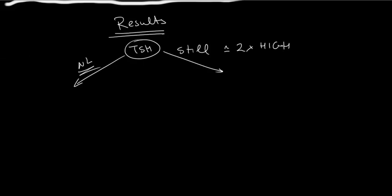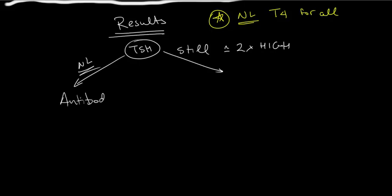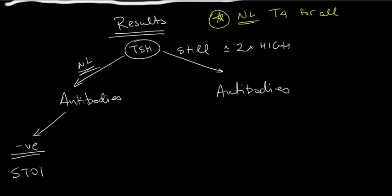An important parenthesis here: this is for patients that, throughout the whole investigation period, have had normal T4 and normal thyrohormone levels. We're not talking about anybody who has low levels of thyrohormone. On both occasions, together with your TSH, we also check antibodies. To the left of the flowchart, if you have normal TSH and negative antibodies, you're in the clear — false alarm. You can stop and reassure the patient.